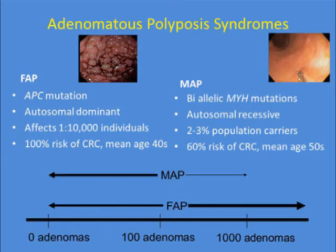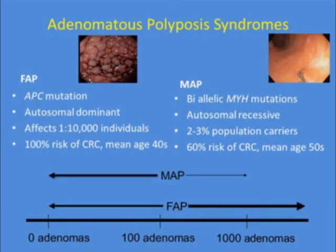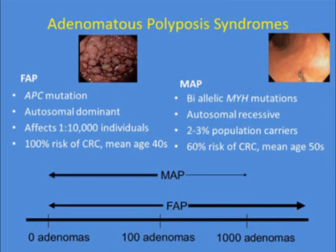When thinking about cumulative lifetime adenoma burden, oligopolyposis should make you think about FAP due to an APC mutation. However, the majority of individuals with MAP will have an attenuated phenotype. When you get to 100 to 1,000 adenomas or more, it's much less likely to be MAP and much more commonly related to an APC mutation.